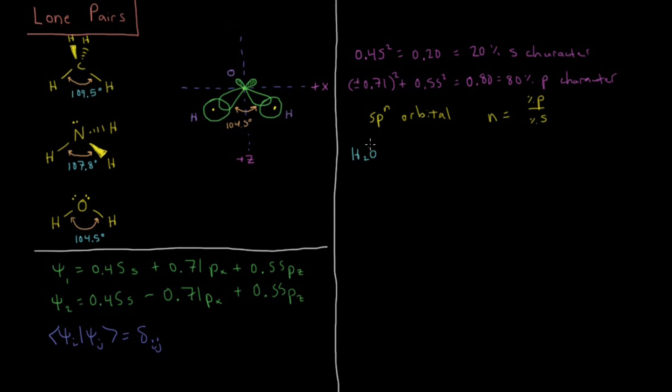H2O, n equals 80% p, 0.80 over 0.20 equals 4.0. So that means that for water, we have an sp4.0 or an sp4 orbital.